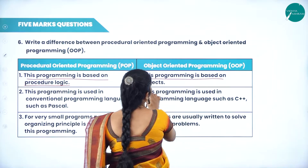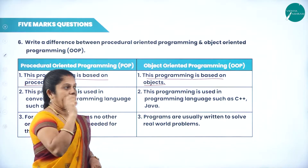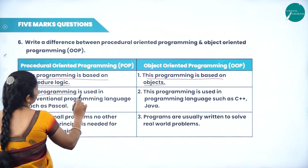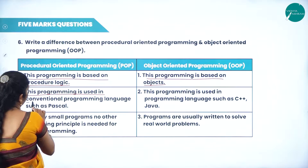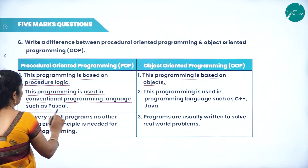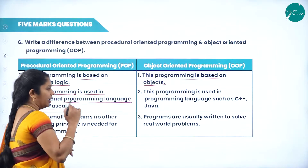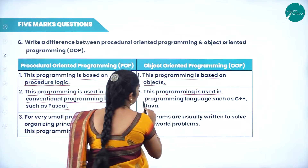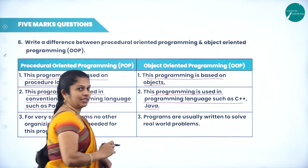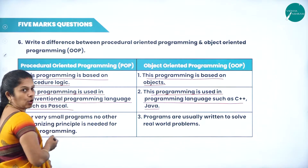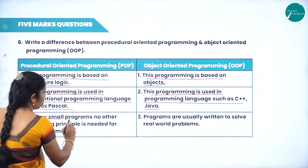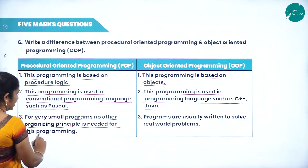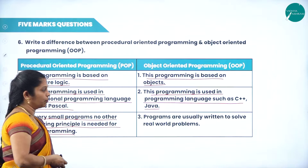In procedural programming, this programming is used in conventional programming languages such as Pascal. Whereas in object-oriented programming, languages such as C++ and Java are used. For very small programs, no other organizing principle is needed, so procedural programming is used. Whereas in OOP, programs are usually written to solve real-world problems.